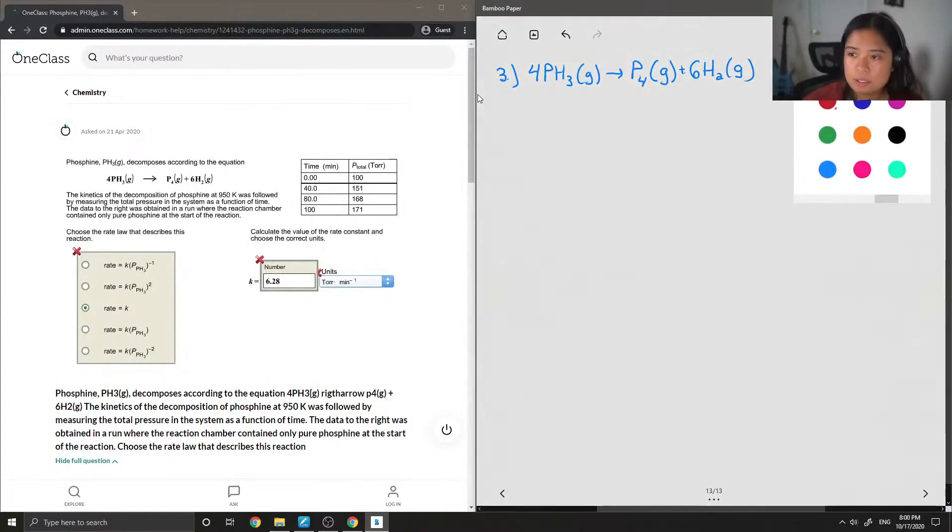Given the units there, I'm gonna make a rough graph of the time versus the pressure. Sorry, this is smaller than I thought. So this is obviously not to scale, it's just so that we can kind of estimate the rate of the reaction. So this is pressure and then on the x-axis is gonna be time.